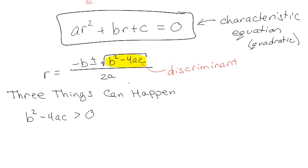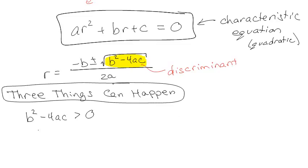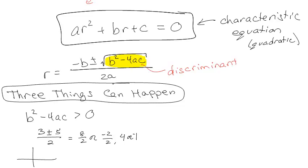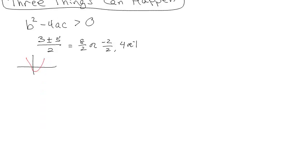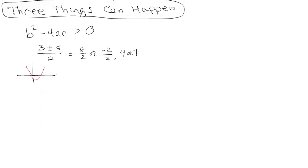Three things can happen. If the discriminant b² − 4ac is greater than zero, you end up with something like (3 ± 5)/2, giving options 4 or −1 — so two distinct real numbers. If you graphed the polynomial it would cross the x-axis at those two points. In college algebra terms, we call this two distinct real solutions.